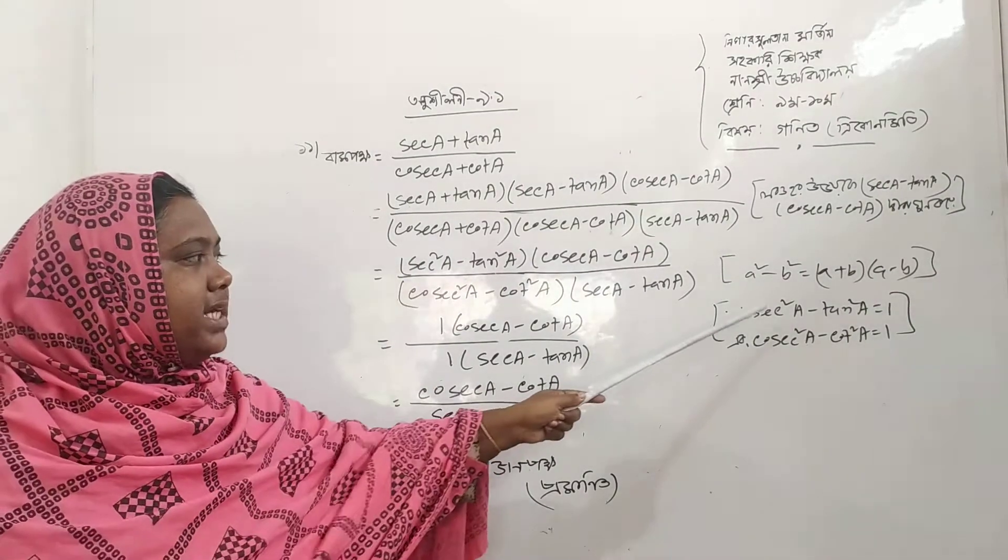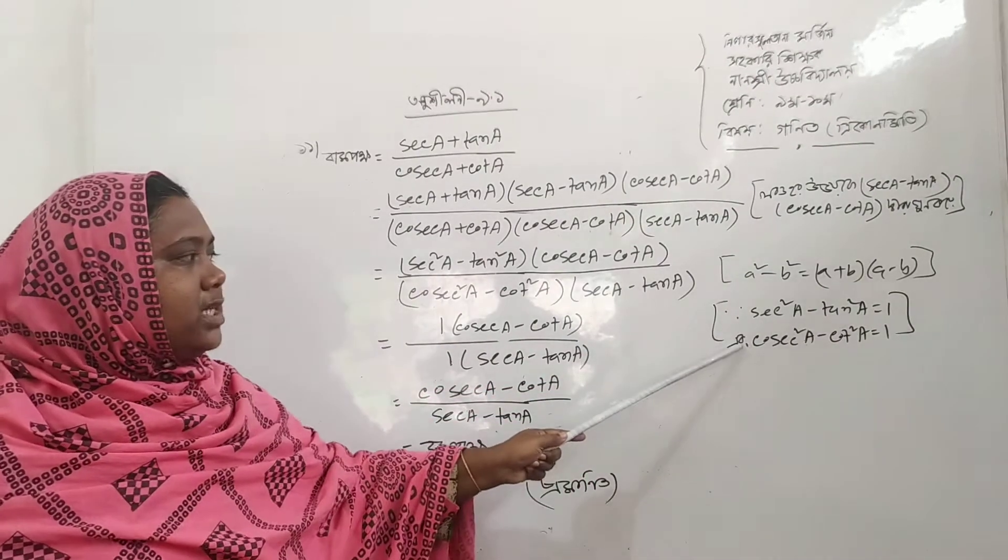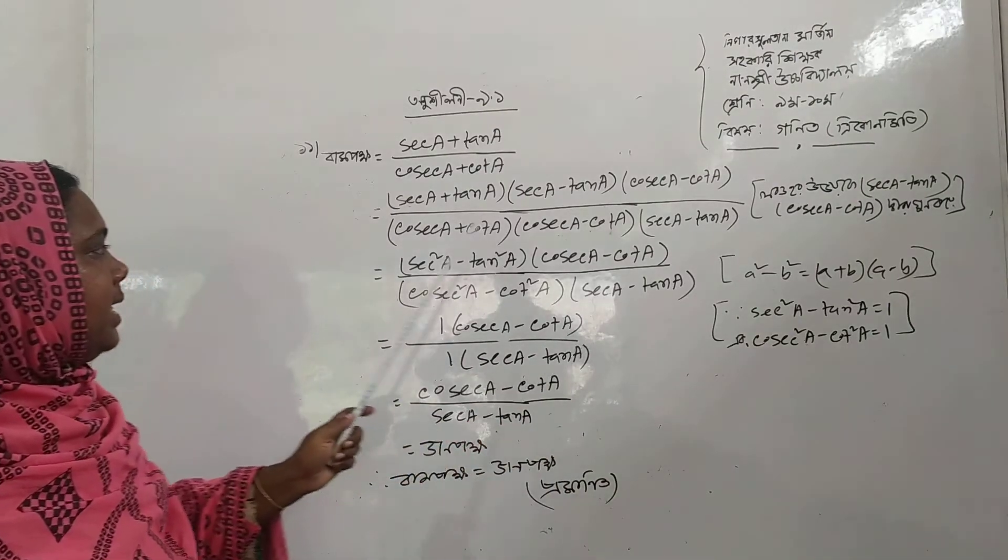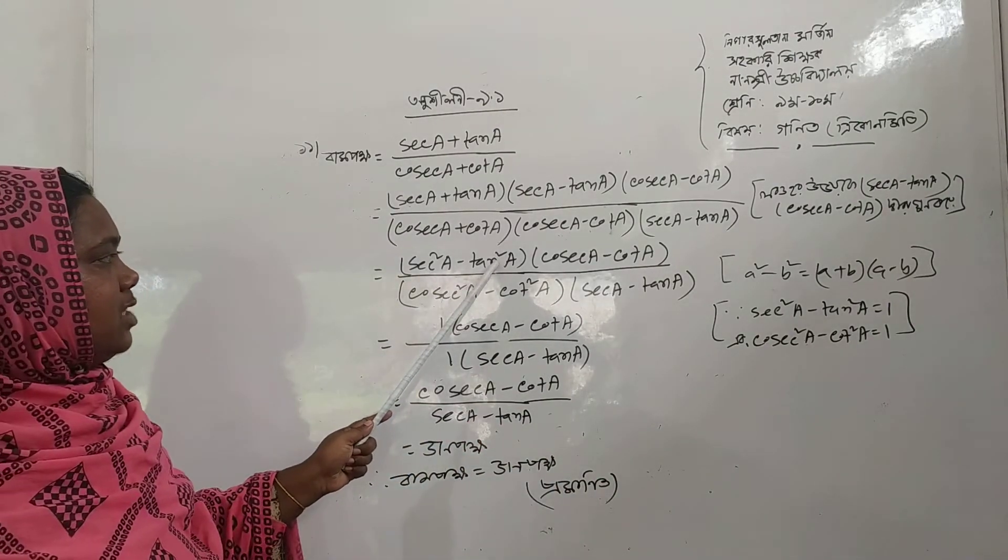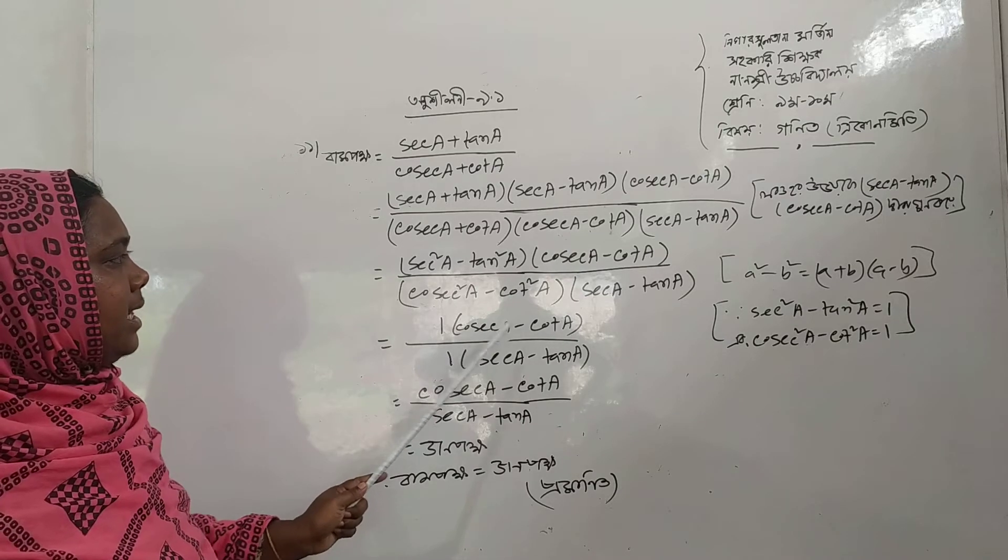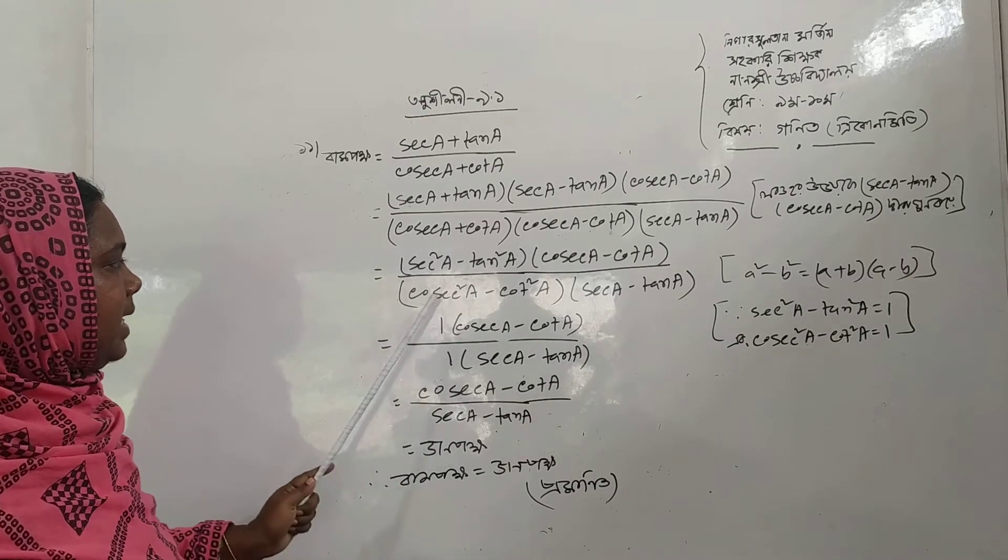It's 6 square minus 1 and 9 square minus 6 square minus 2. Into 6 square minus 1, 2.